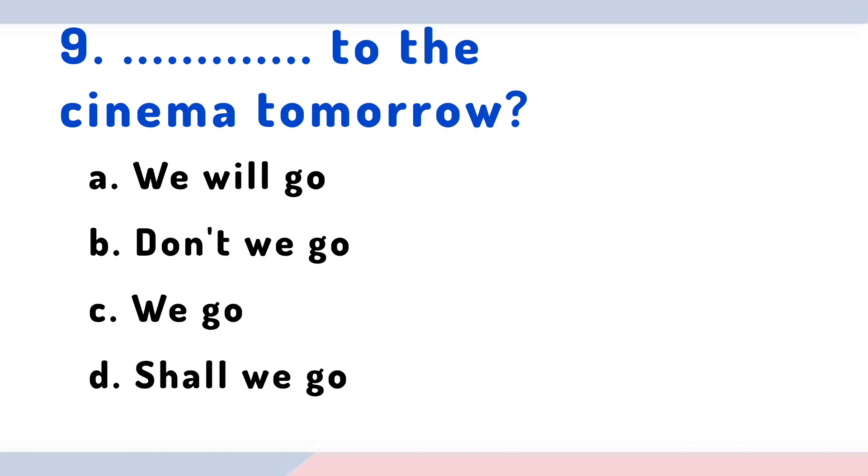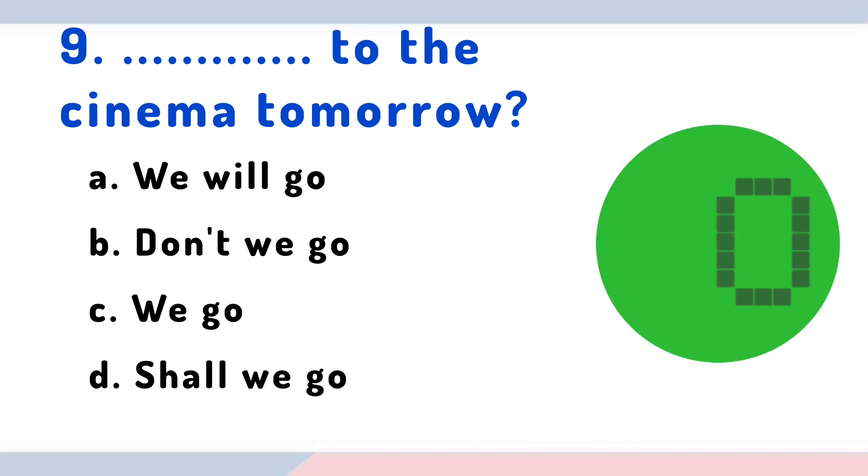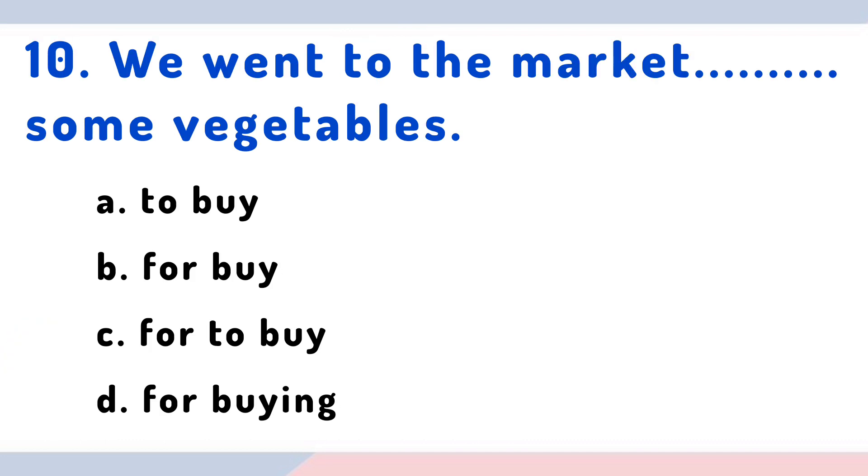Question 9: To the cinema tomorrow. Options: we will go, don't we go, we go, shall we go. Question 10: We went to the market some vegetables. Options: to buy, for buy, for to buy, for buying.